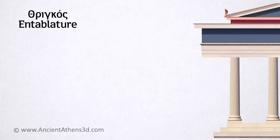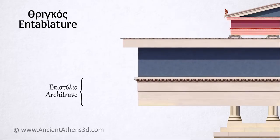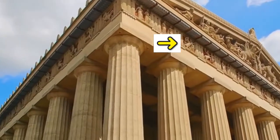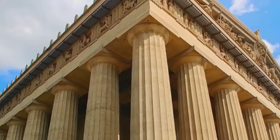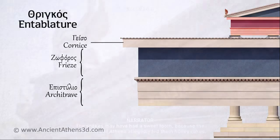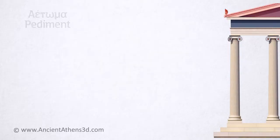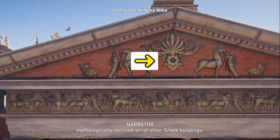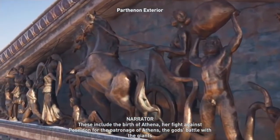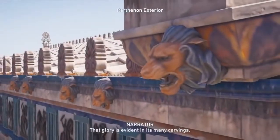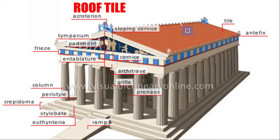Entablature: the lower section of the roof consisting of the architrave, frieze, and cornice. Architrave: the lowest part of the entablature, receiving the capital of the column. Frieze: the decorated middle part of the entablature. Cornice: the molded projection on the topmost of the entablature. Pediment: the triangular upper section of the roof above the entablature. Tympanum: the gable wall with sculptures. Acroteion: a decoration on the roof apex. Antefix: an ornament on the lower edges of the roof. Tile: a molded baked clay used as a roofing material.